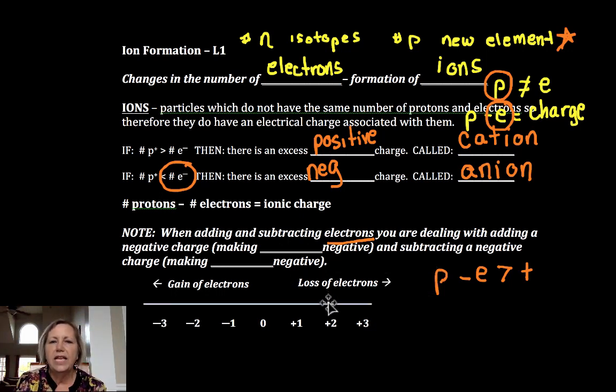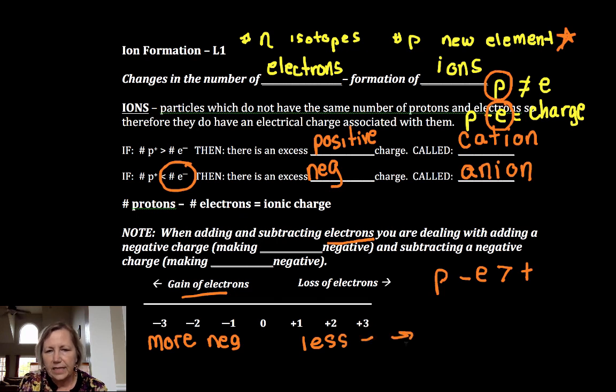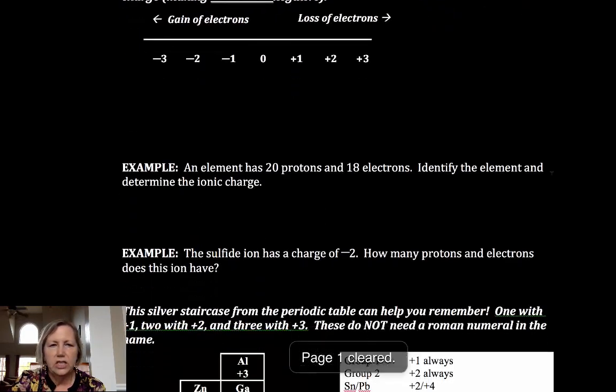So I like to think of it as becoming more negative or less negative. So if it's more negative we're adding or gaining electrons. If it's less negative then that's a loss of electrons. I don't like to think of it as more negative and more positive. If you think of it as more negative gain electrons, less negative loss of electrons, I think you'll have a little bit better luck. So more negative and less negative.